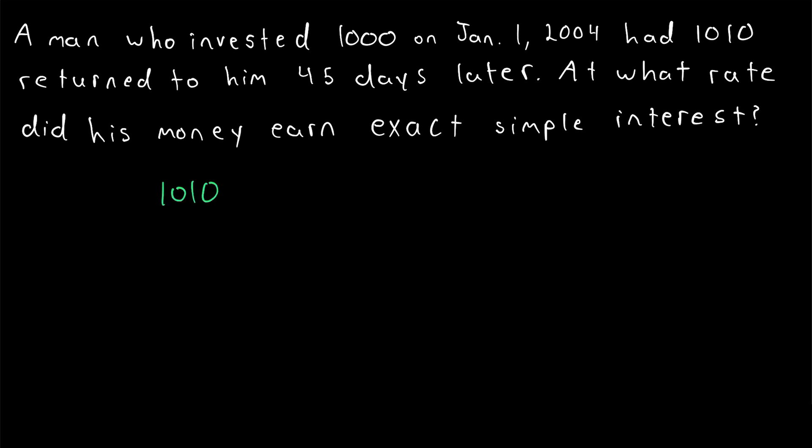So, we have 1,010 is equal to the principal investment of 1,000 multiplied by 1 plus the interest rate, which is what we're trying to solve for. So, we'll just call that R, multiplied by the amount of time that has passed, or the number of interest periods.